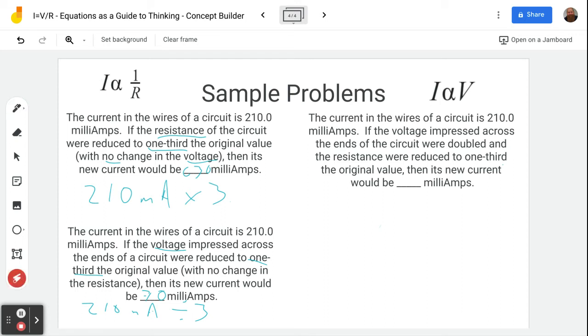Then next question, we combine, we have two things happening. The current in the wires of the circuit is 210 milliamps. If the voltage across the ends were doubled, and the resistance were reduced to one-third of the original value, then the new current would be. Well, let's just go in order here.